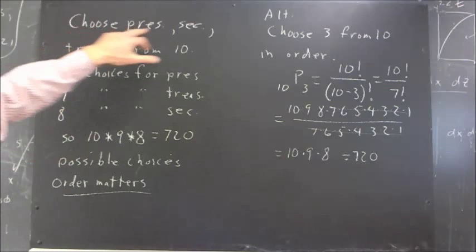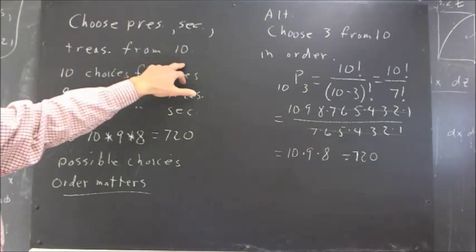In the next question, we're asked to choose a president, a secretary, and a treasurer from among ten people.